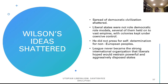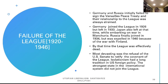The League that liberals hoped would restrain powerful and aggressively expansionist states could not stop Germany or Italy. Germany and Russia initially failed to sign the Versailles Peace Treaty, and their relationship to the League was always strained. Germany joined the League only in 1926 but left in 1933. Japan also left while embarking on a war in Manchuria. Russia finally joined in 1934 but was expelled in 1940 because of the war with Finland. But by that time the League was effectively dead. Most devastating was the refusal of the U.S. Senate to ratify the covenant of the League. Isolationism had a long tradition in U.S. foreign policy; the strongest state in the international system did not join the League.